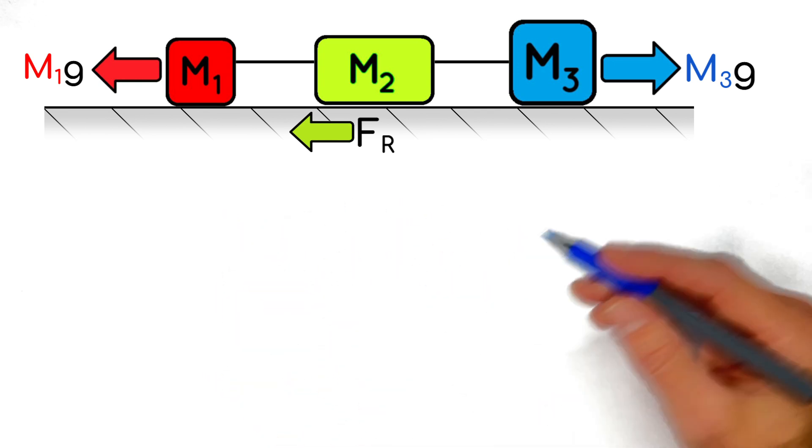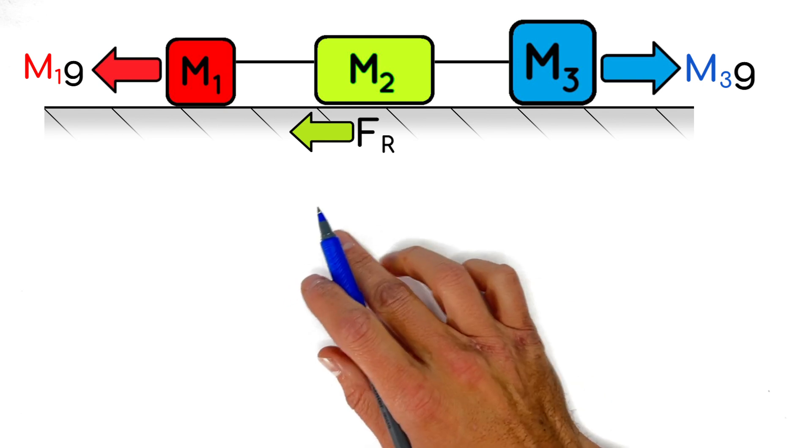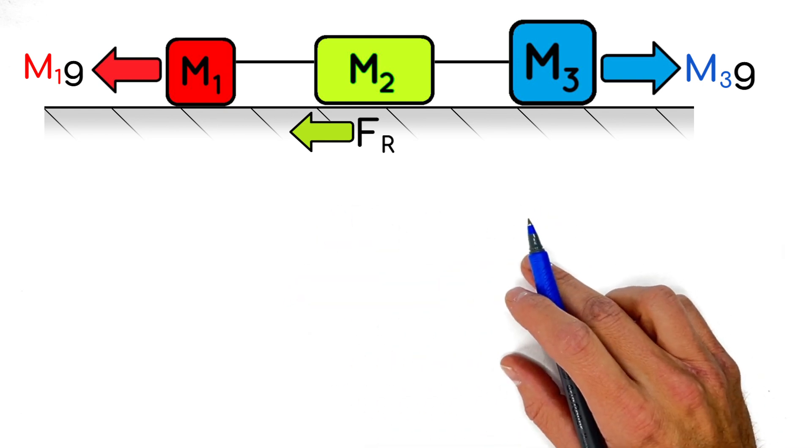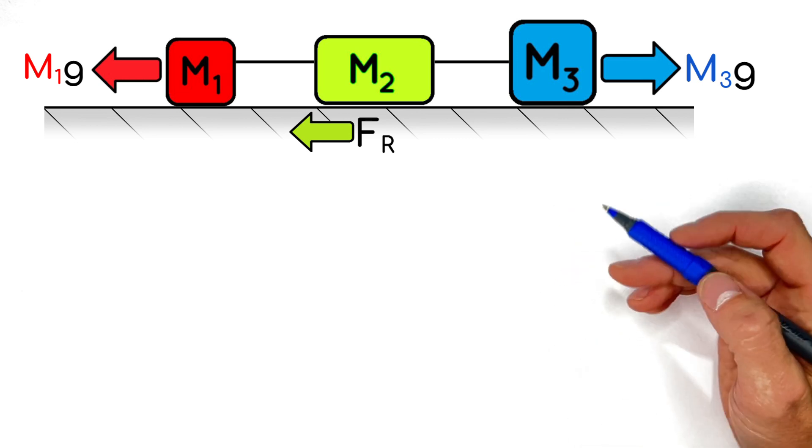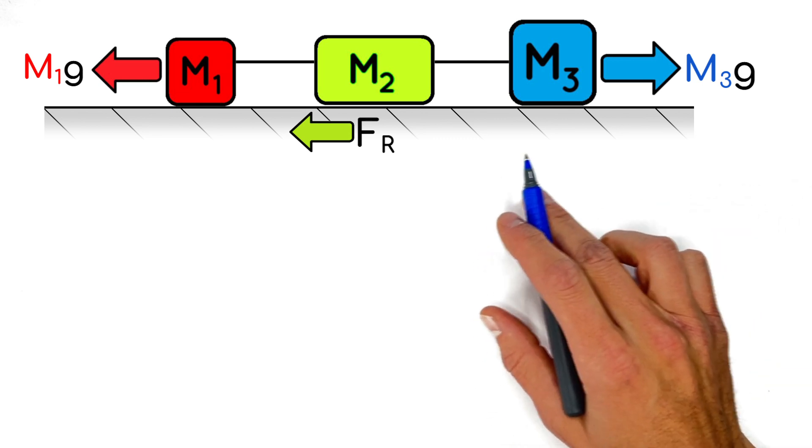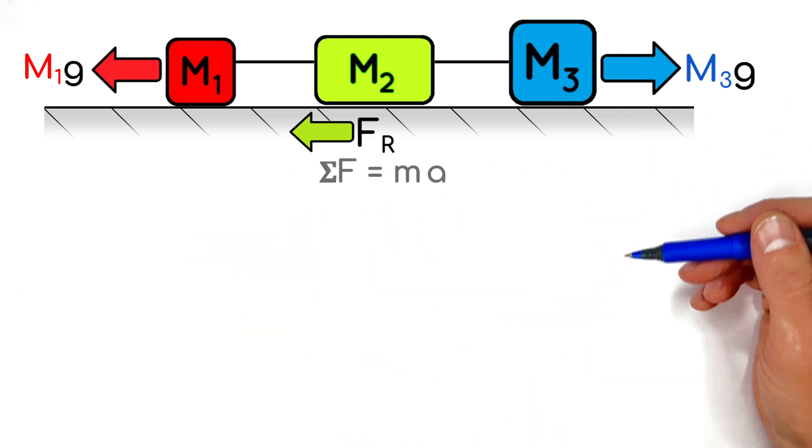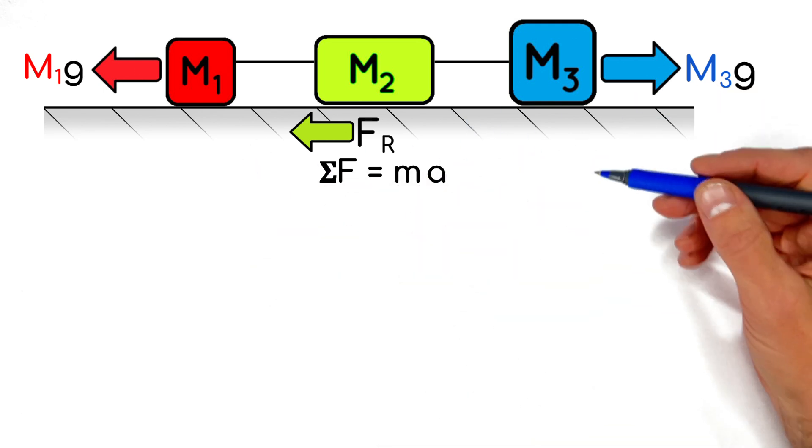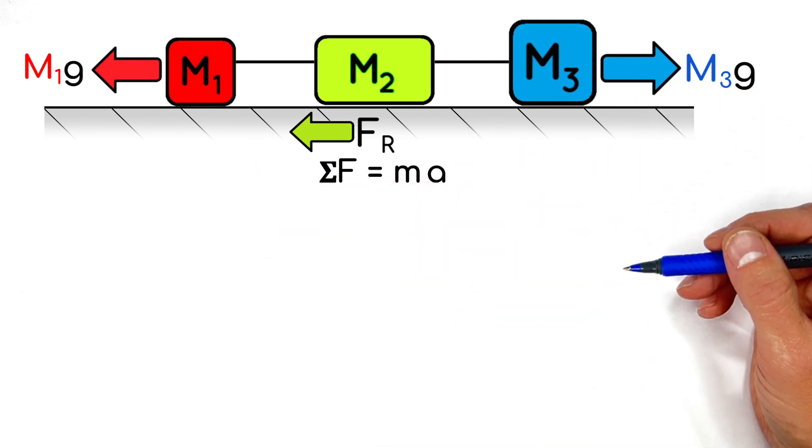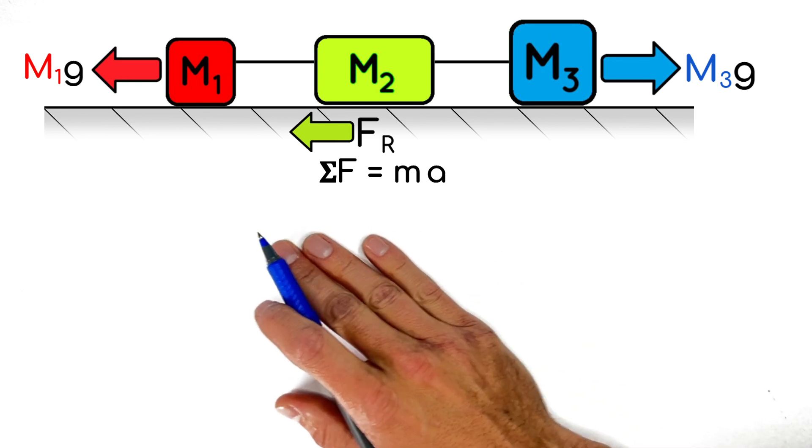And looking at the problem this way, there's nothing too scary here. If we say to the right is positive, we've got three forces, one in the positive direction and two in the negative direction. And all we're going to do is plug these three forces into Newton's second law and allow them to act on these three blocks, which are really connected and we can view as one unit. So we're really only using Newton's second law once here.